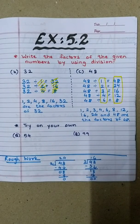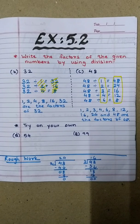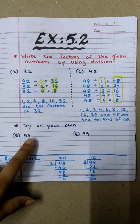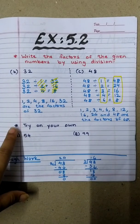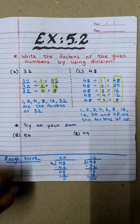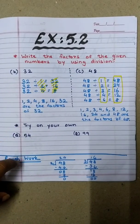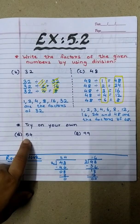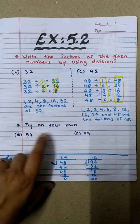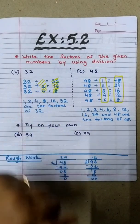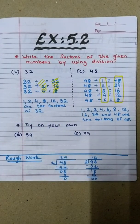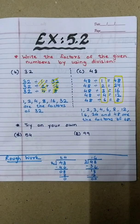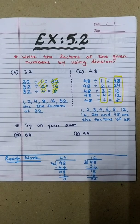Now I hope this is easy for you. So now it's time to try on your own. Try finding out the factors of 54 and 99 by using the division method. All the best.